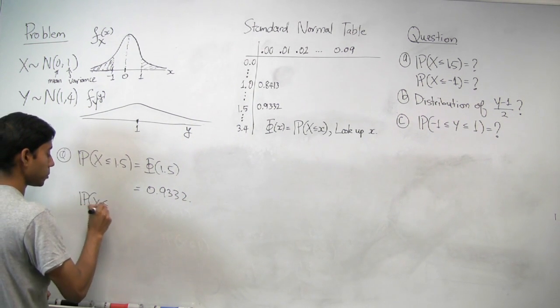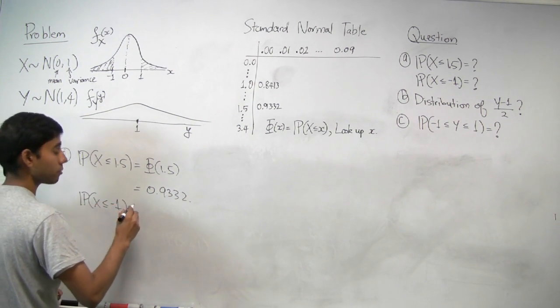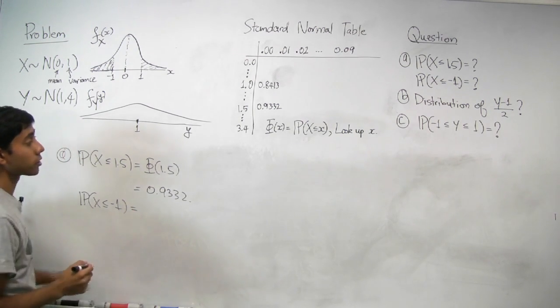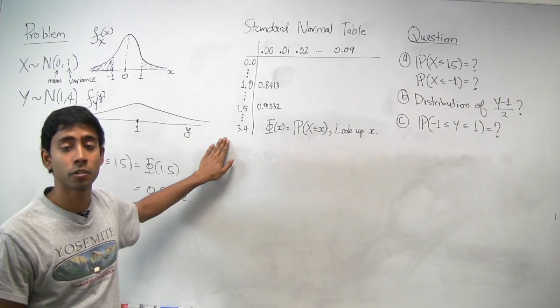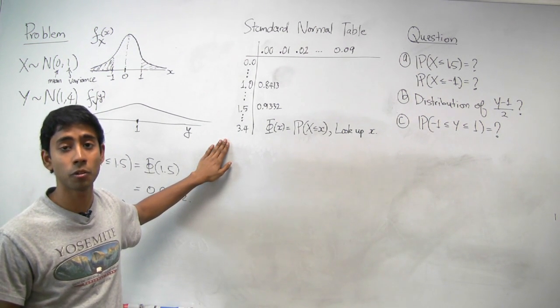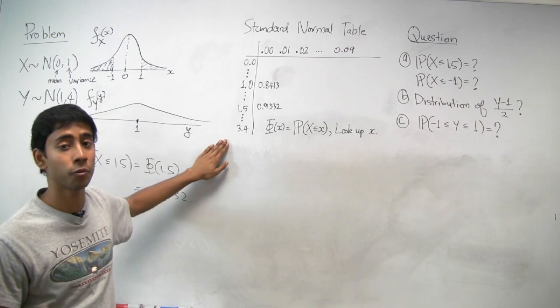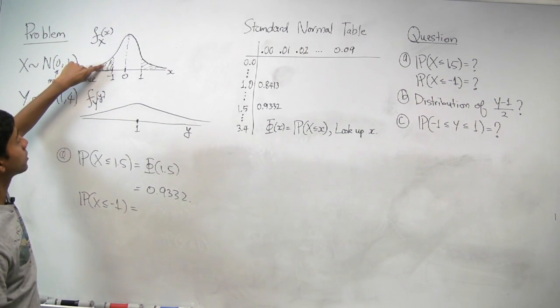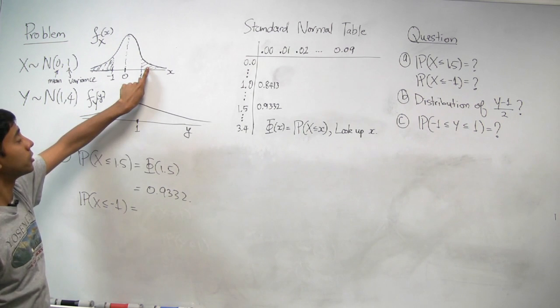Then we're asked what's the probability that X is less than or equal to negative 1. Notice that negative values are not on this table. And the reason that is is because the standard normal is symmetric around 0, and we don't really need that. We just recognize that the area in this region is exactly the area in this region.